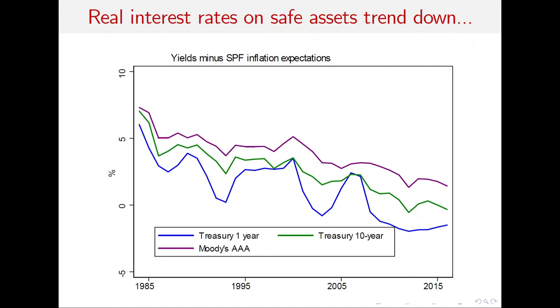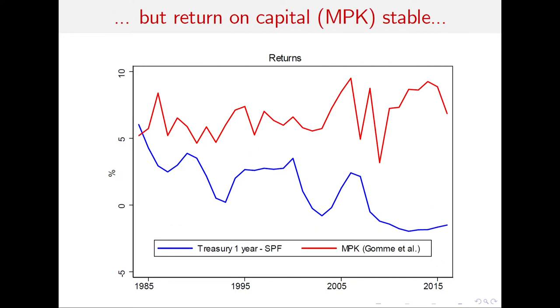I want to show you a couple of stylized facts by way of introduction. The first one you've probably seen thousands of times — it documents the decline in the real interest rate in the U.S., but that's a worldwide phenomenon since the early 80s. A lot has been written about what could be causing this decline, with many potential explanations proposed.